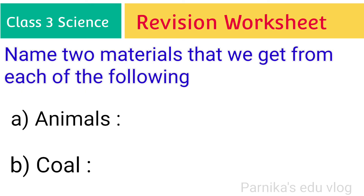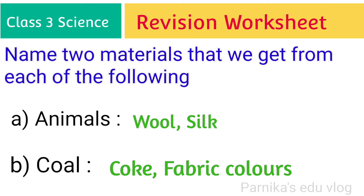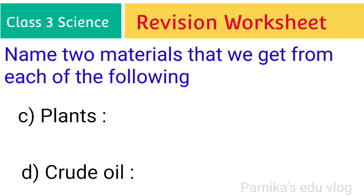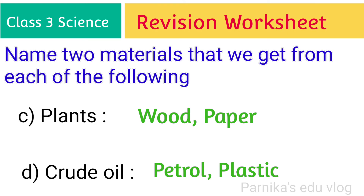Friends, name two materials that we get from each of the following. First one: animals — wool, silk. Second one: coal — coke, fabric colors. Third one: plants — wood, paper. Fourth one: crude oil — petrol, plastic.